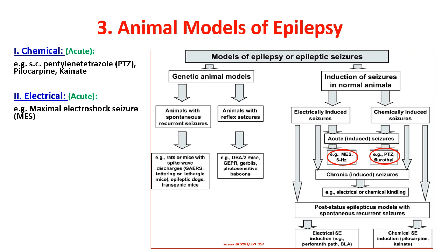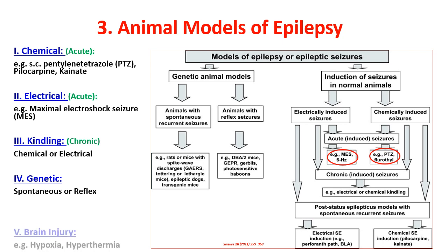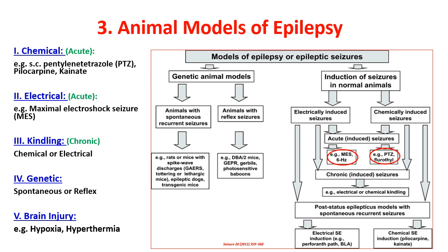For epilepsy models: there is maximal electroshock seizure (MES), kindling method (which is chronic rather than acute seizure), chemical or electrical induction, genetic models, reflex models, and brain injury models via hypoxia or hyperthermia.